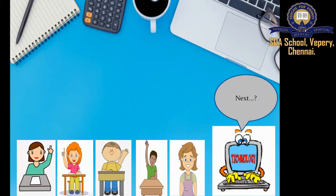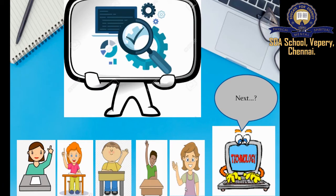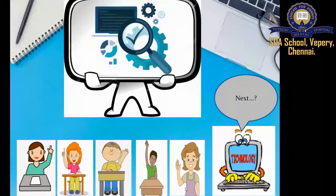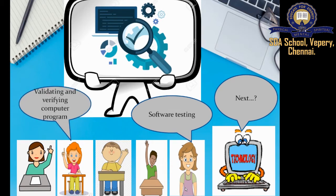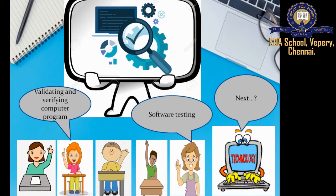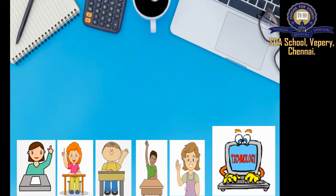The next one is software testing — it is nothing but validating and verifying your computer program. The commonly used validation methods are the Waterfall method, the V model, and the Spiral model.